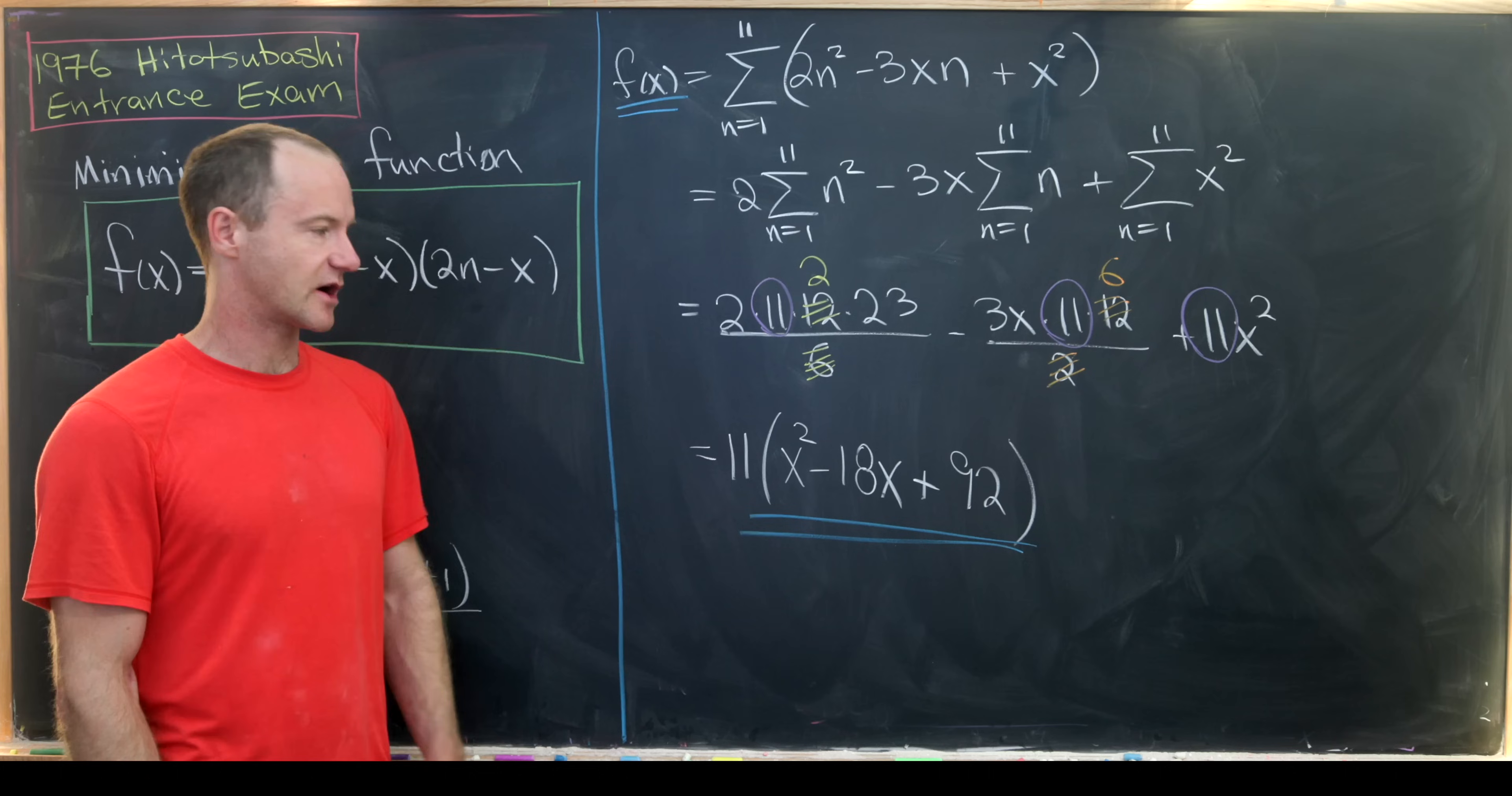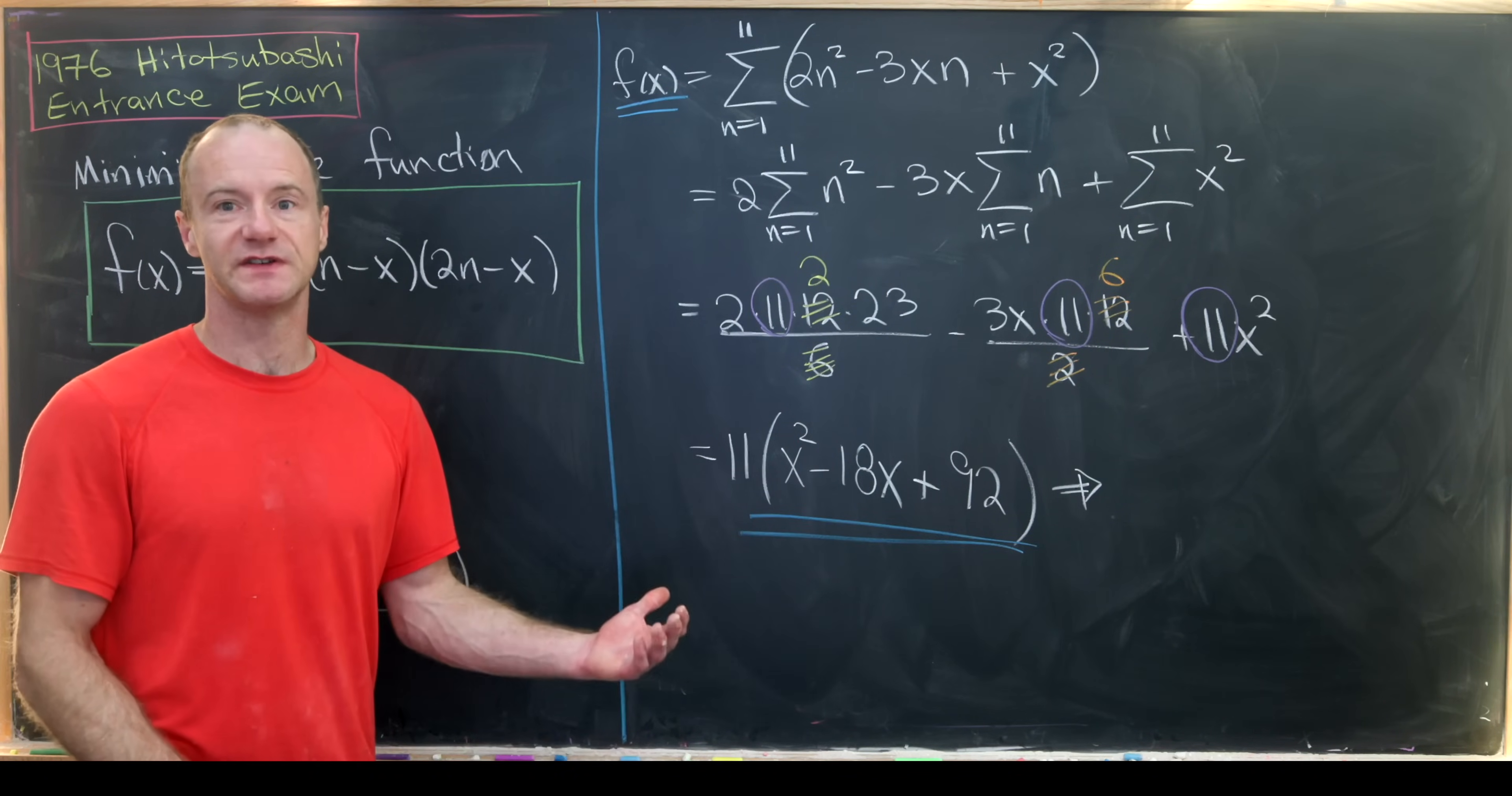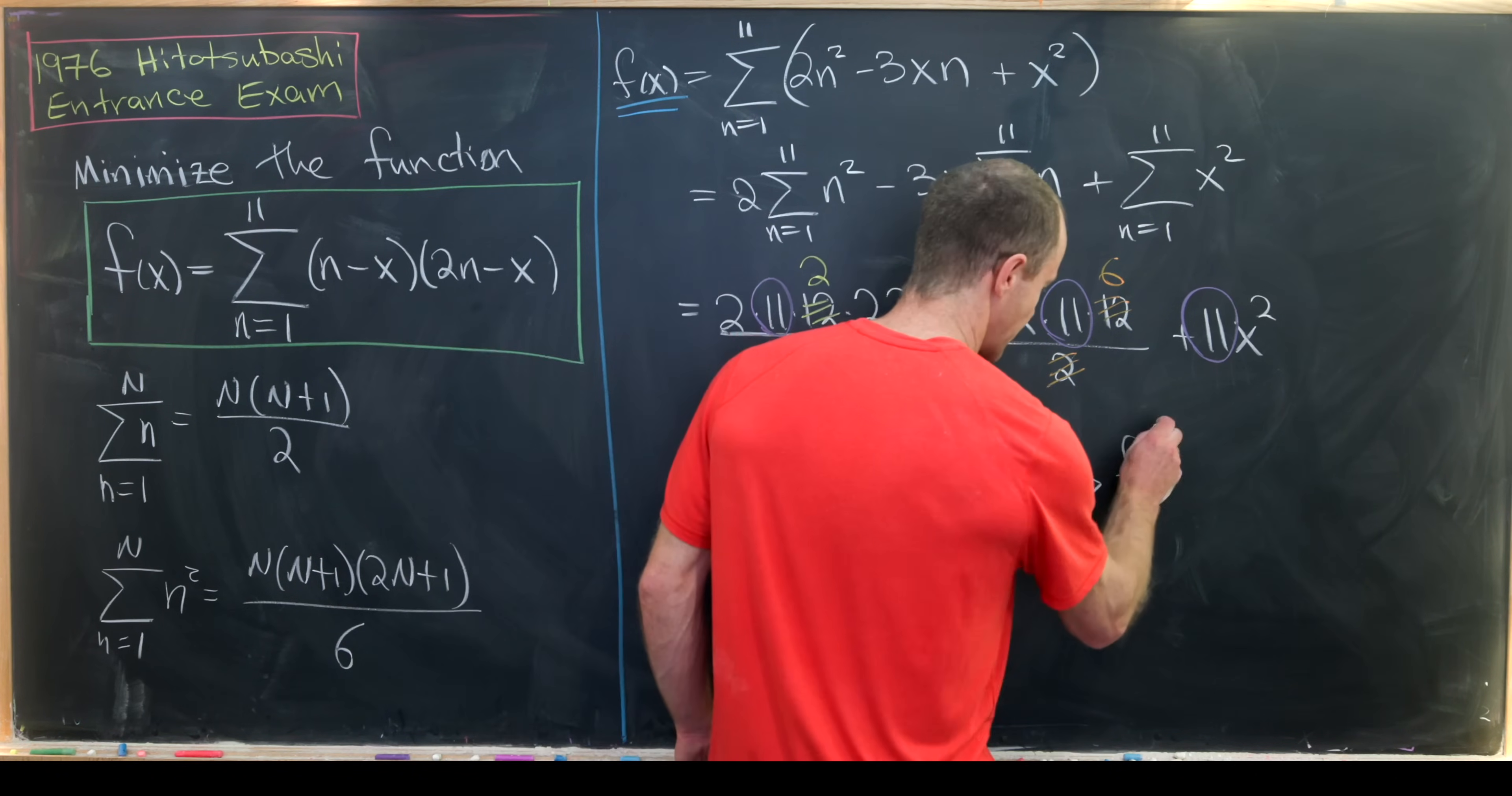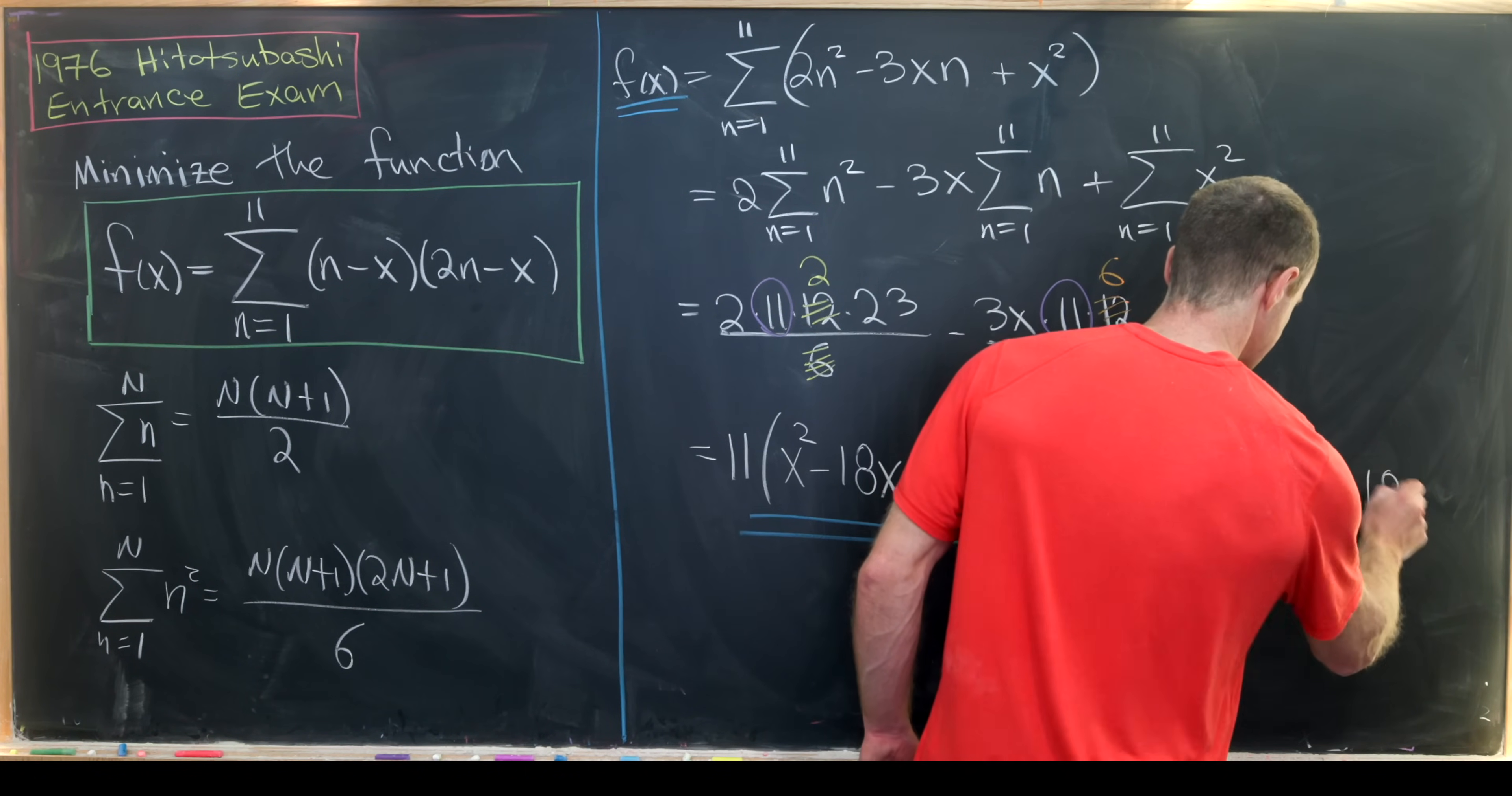We could complete the square and get the same thing or we could do some calculus. So let's maybe do some calculus and find the place where the derivative is 0. So here we get f'(x) is equal to 11 times (2x - 18).